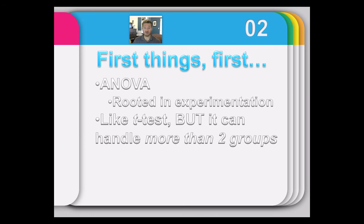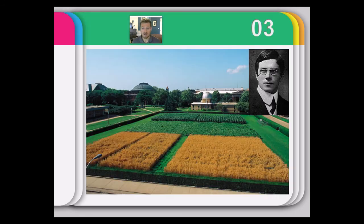You can still do an ANOVA if you only have two groups. In fact, we'll find out that T squared equals F when you only have two groups. But the ANOVA gives us more ability. It was developed like the t-test in an agricultural history of trying to improve productivity.